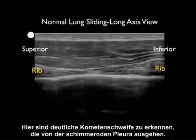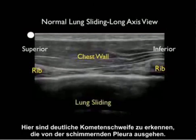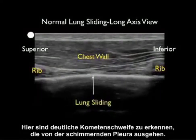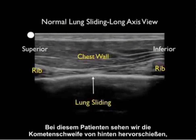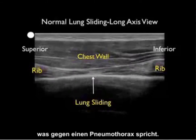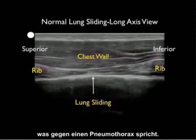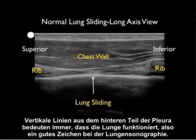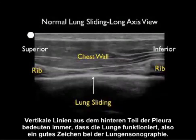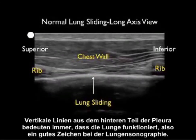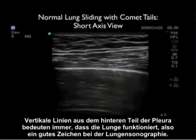Here we see more dramatic comet tails coming off the shimmering parietal and visceral pleura. In this patient, we see the comet tail shooting off the back, telling us that this lung is up and there's no pneumothorax. Vertical lines coming off the back of the pleura always mean that the lung is up and are always a good sign on lung ultrasonography.